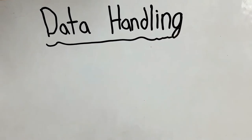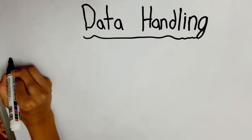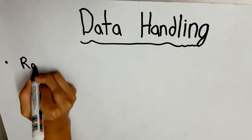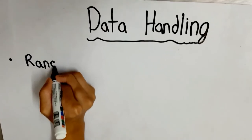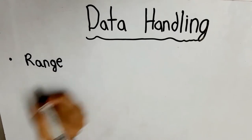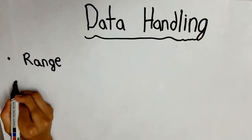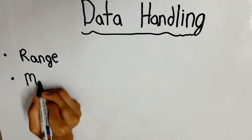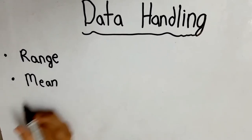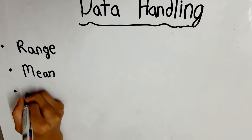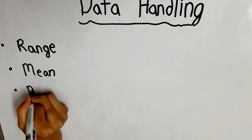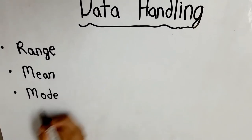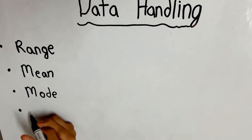In this chapter we are going to discuss four topics: the first one is range, second is mean, third one is mode, and the last but not the least, median.